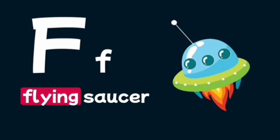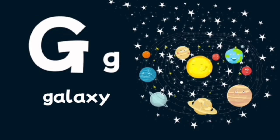F is for flying saucer, a flying object from outer space that looks like a disk. G is for galaxy, a collection of stars in space held together by gravity.